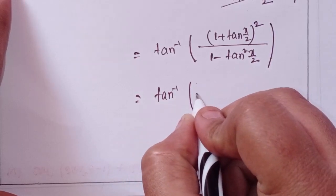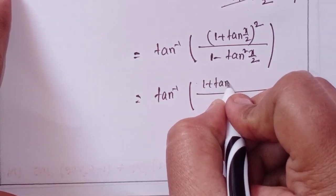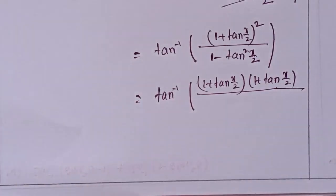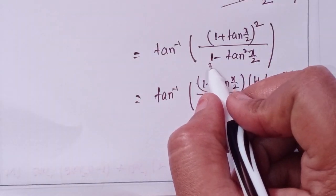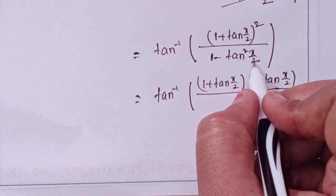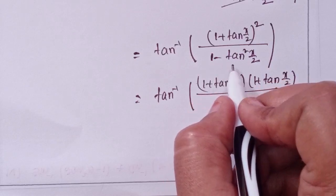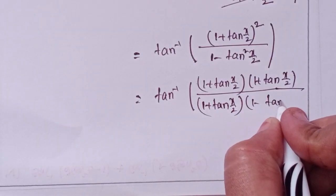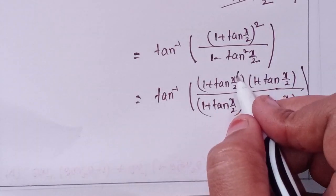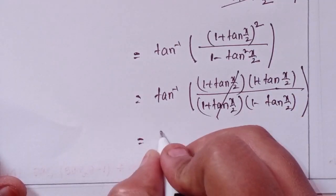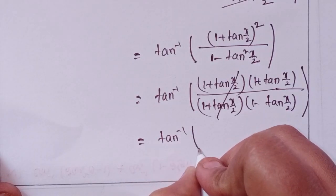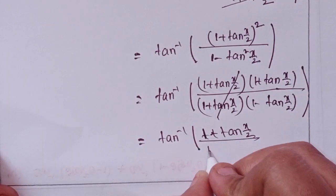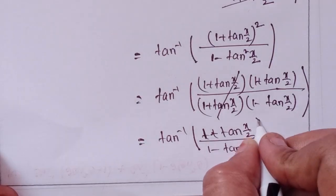Tan inverse — can I write this one as 1 plus tan(x/2) times 1 plus tan(x/2)? Here 1 can be written as 1 squared, and tan²(x/2) means tan(x/2) whole squared. This is a² minus b² form, i.e., (a+b)(a-b). These two cancel, giving tan inverse of (1 plus tan(x/2)) divided by (1 minus tan(x/2)).